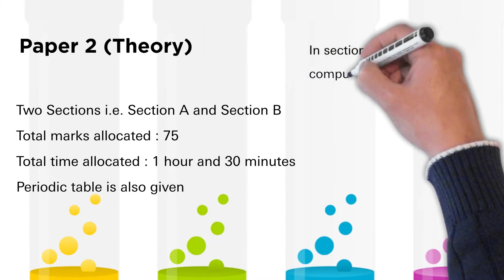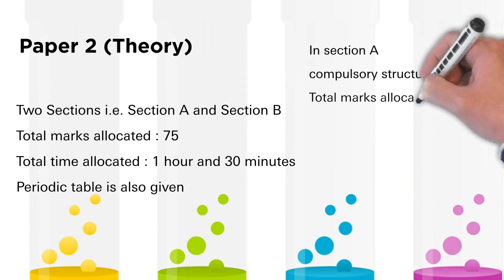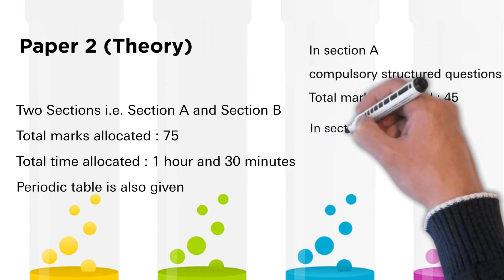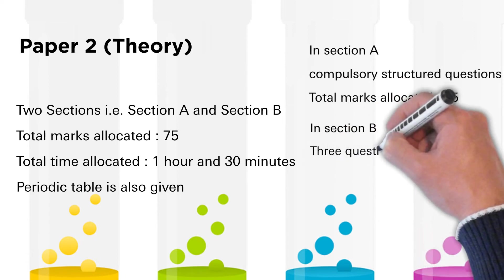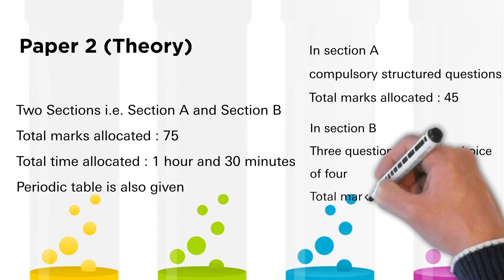In Section A, there are some compulsory structured questions. Total marks allocated for this section are 45. In Section B, students have to answer three questions from the choice of four. Total marks allocated for this section are 30.